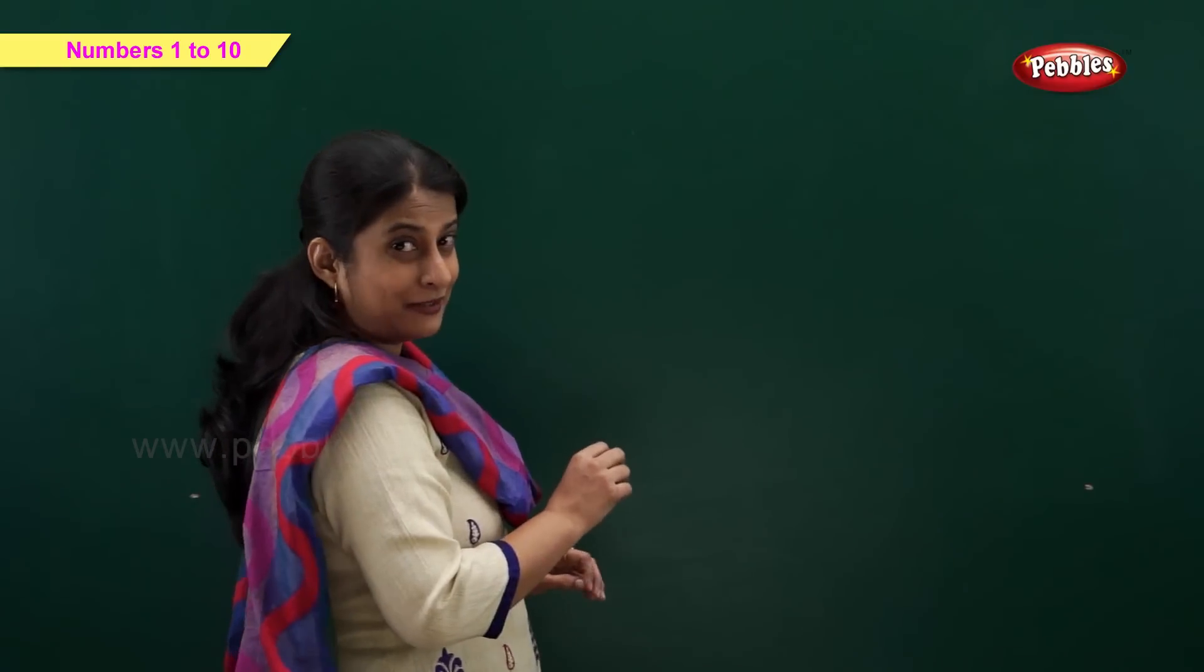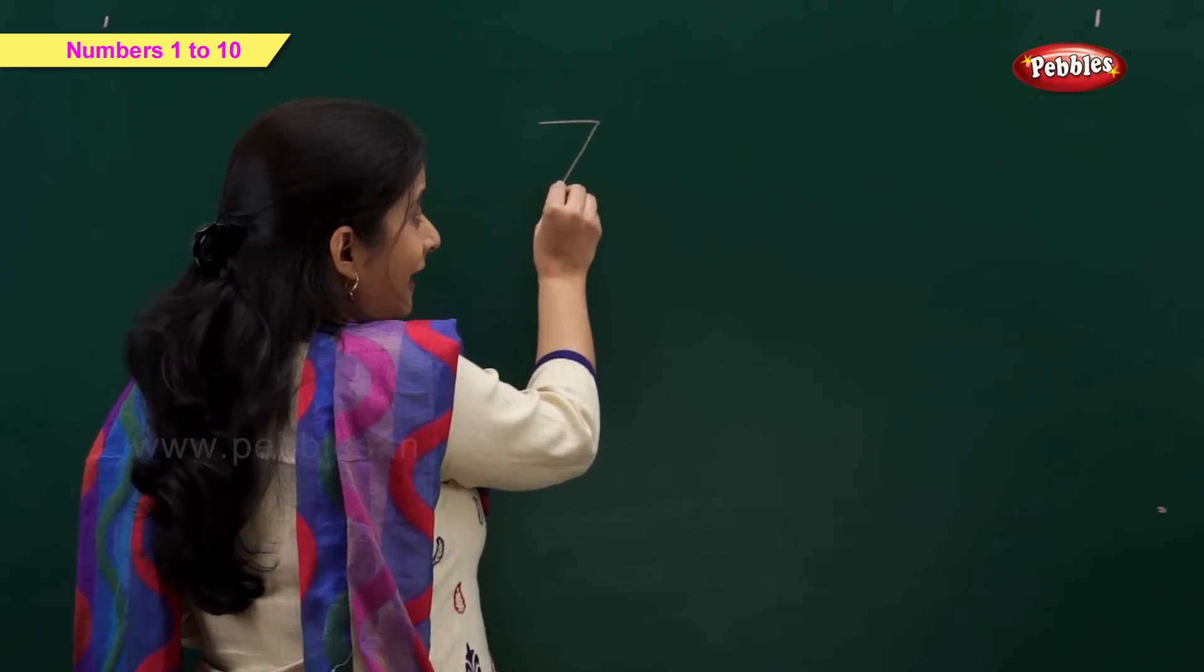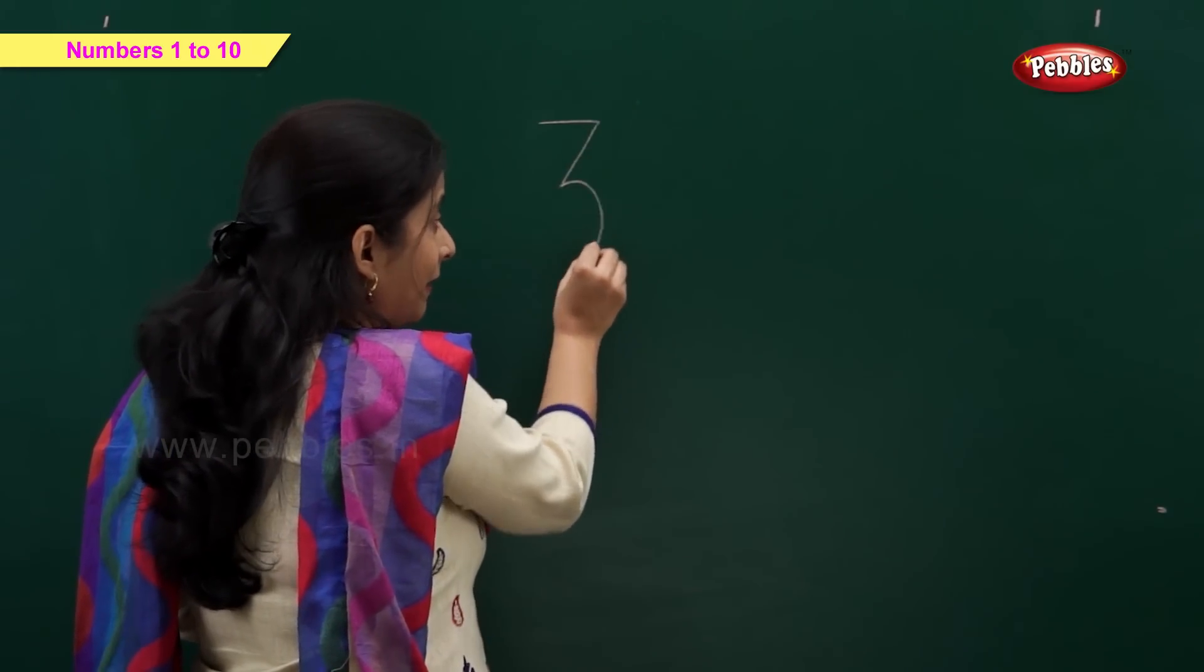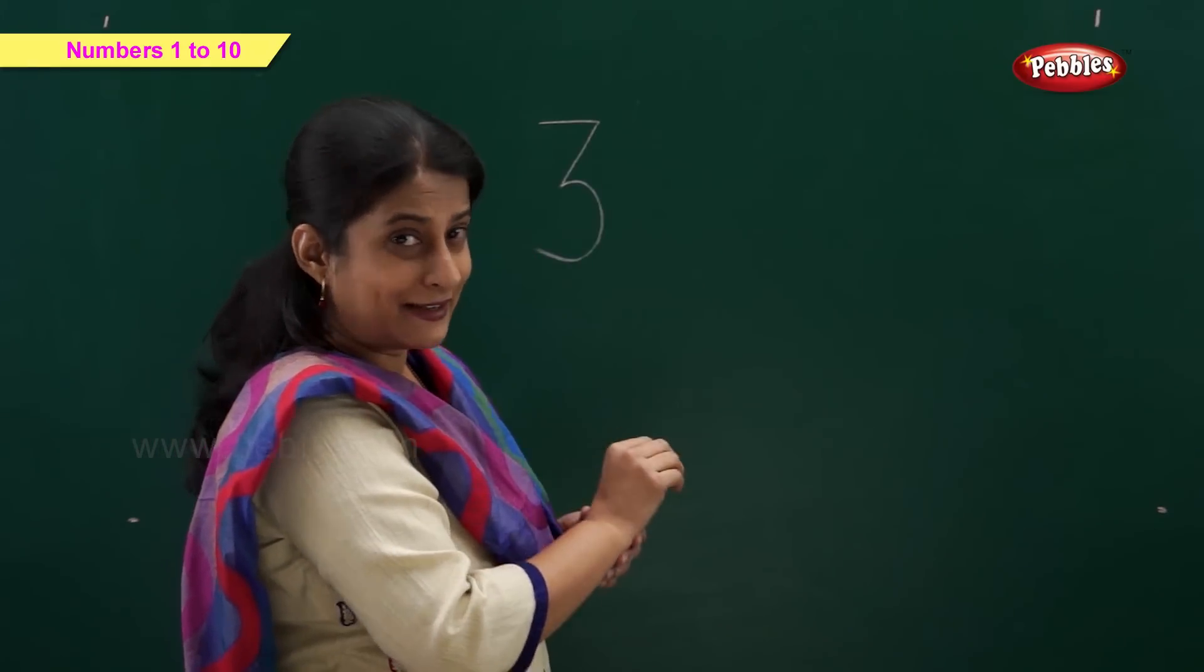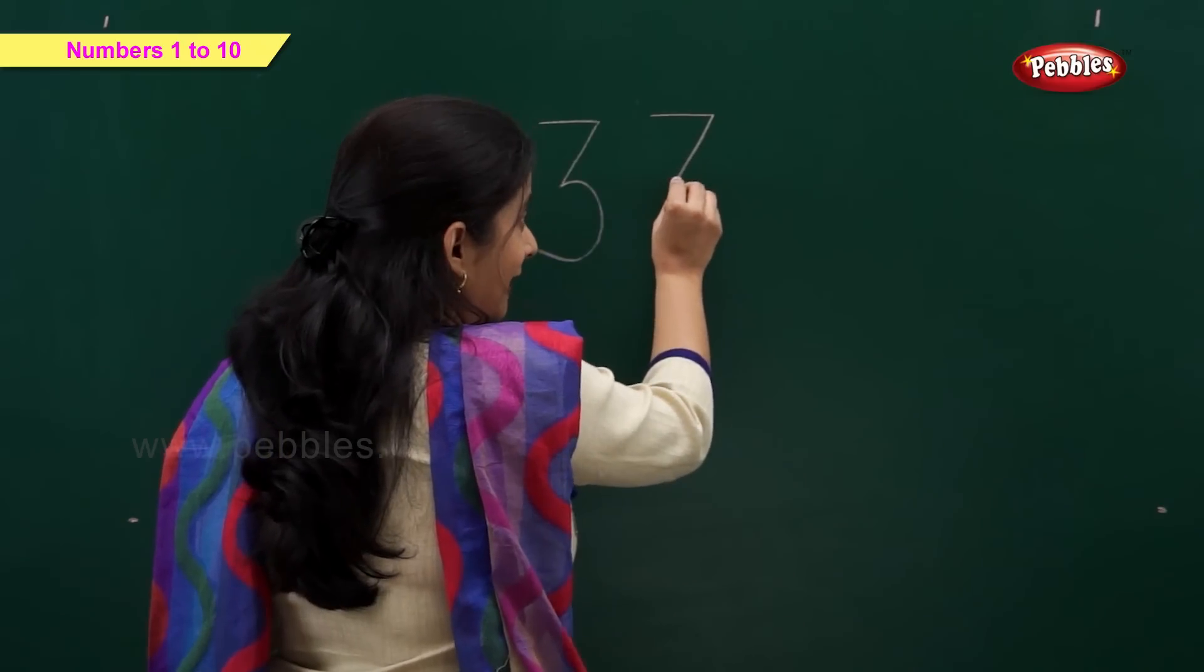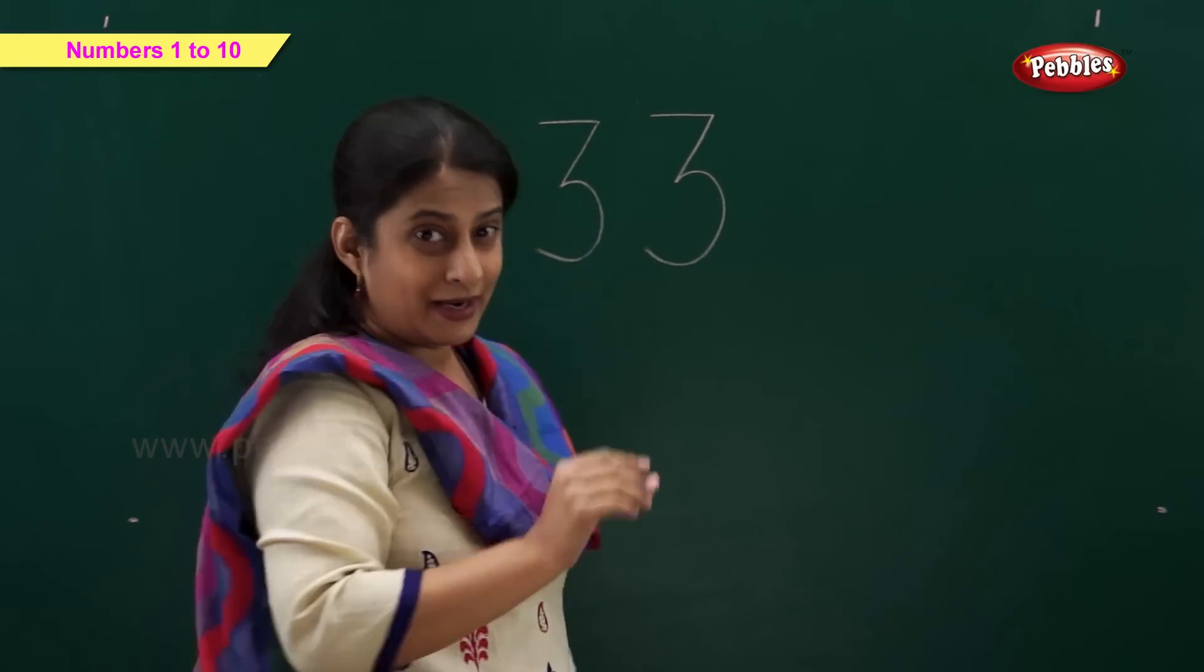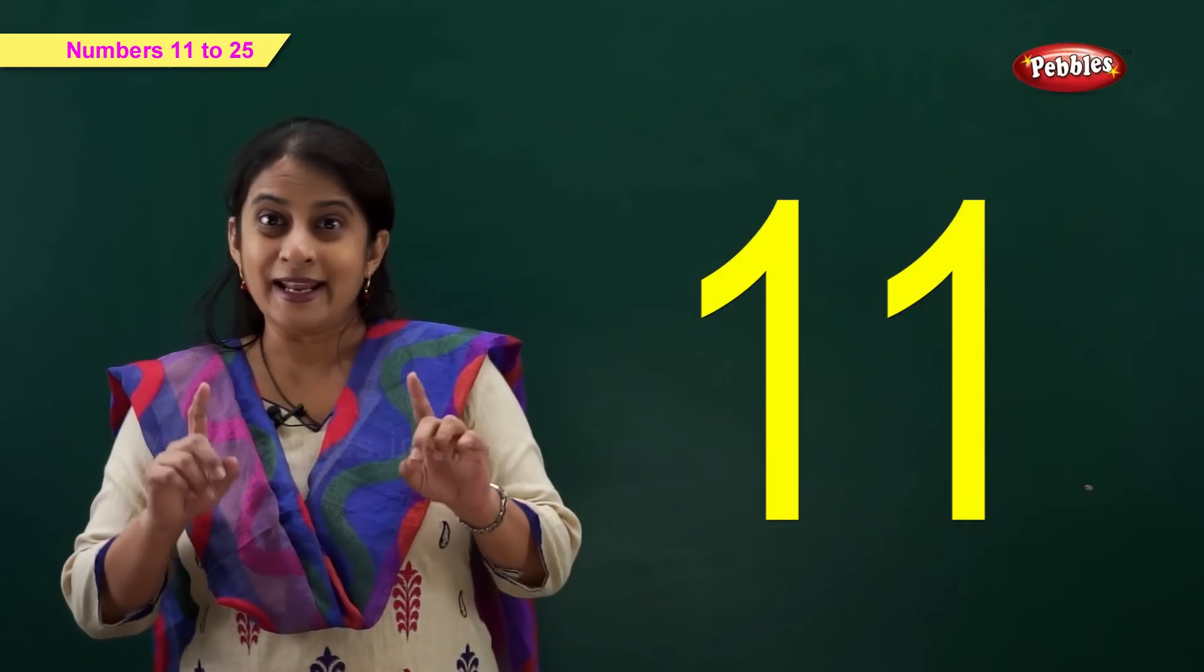For writing number 3, what do we need? We need a sleeping line. A slanting line. And a curve. Yes. Let's write again. A sleeping line. A slanting line. And a curve. That makes number 3. Number 11.